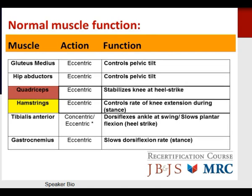Understanding those basic concepts, we can now discuss normal muscle function of the lower extremity as it relates to gait. Looking at the muscles of the lower extremity, the majority function in eccentric contractions, which makes sense given that eccentric contraction is the most efficient manner of muscle activity. It also makes sense that most muscles would want to function in the most efficient manner.